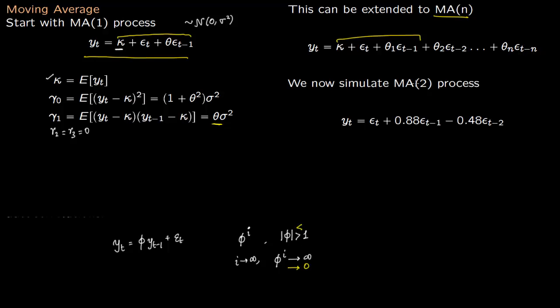So let us do an example of simulating an MA(2) process. This y_t is epsilon_t plus 0.88 epsilon_{t-1} minus 0.48 epsilon_{t-2}.